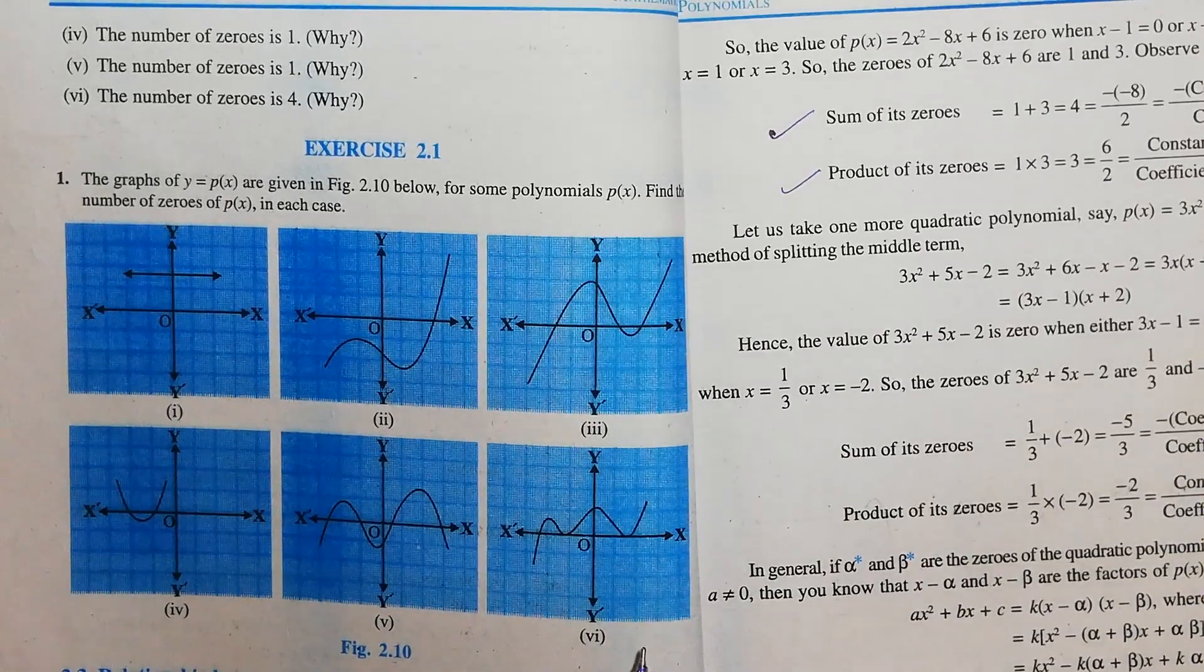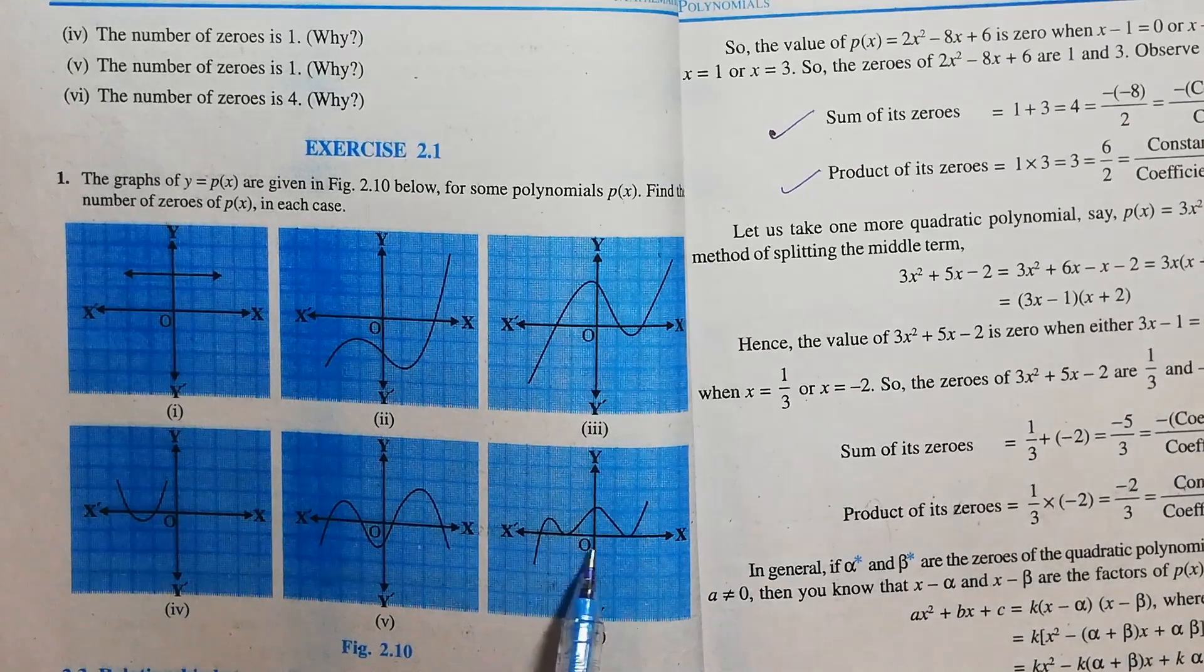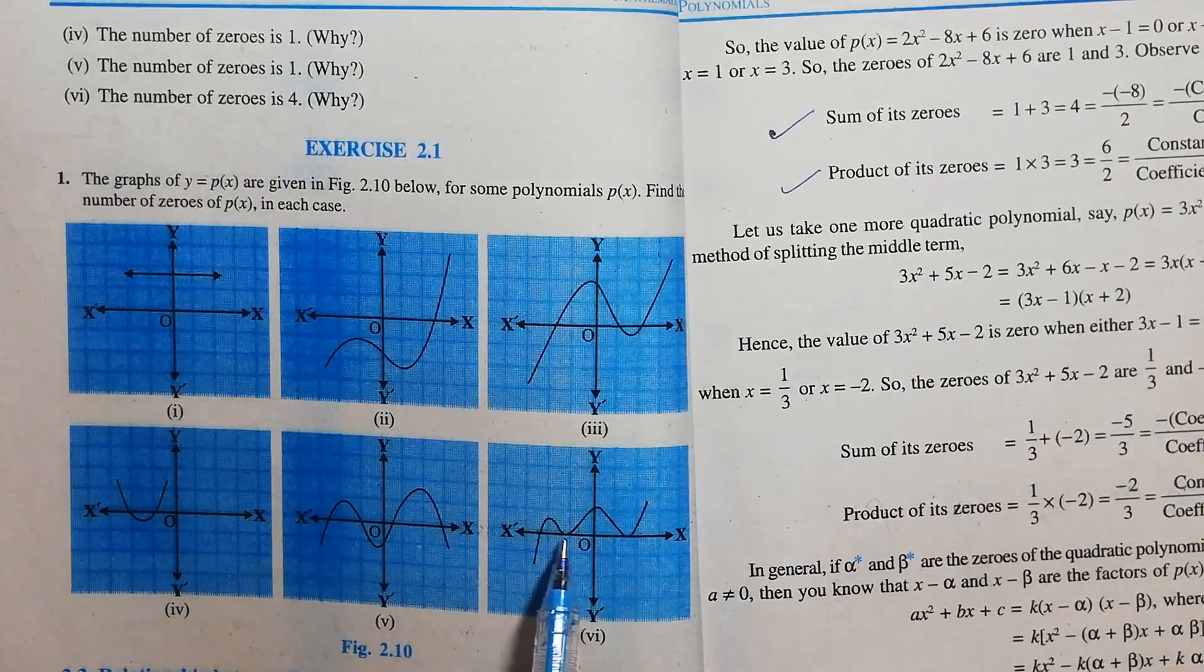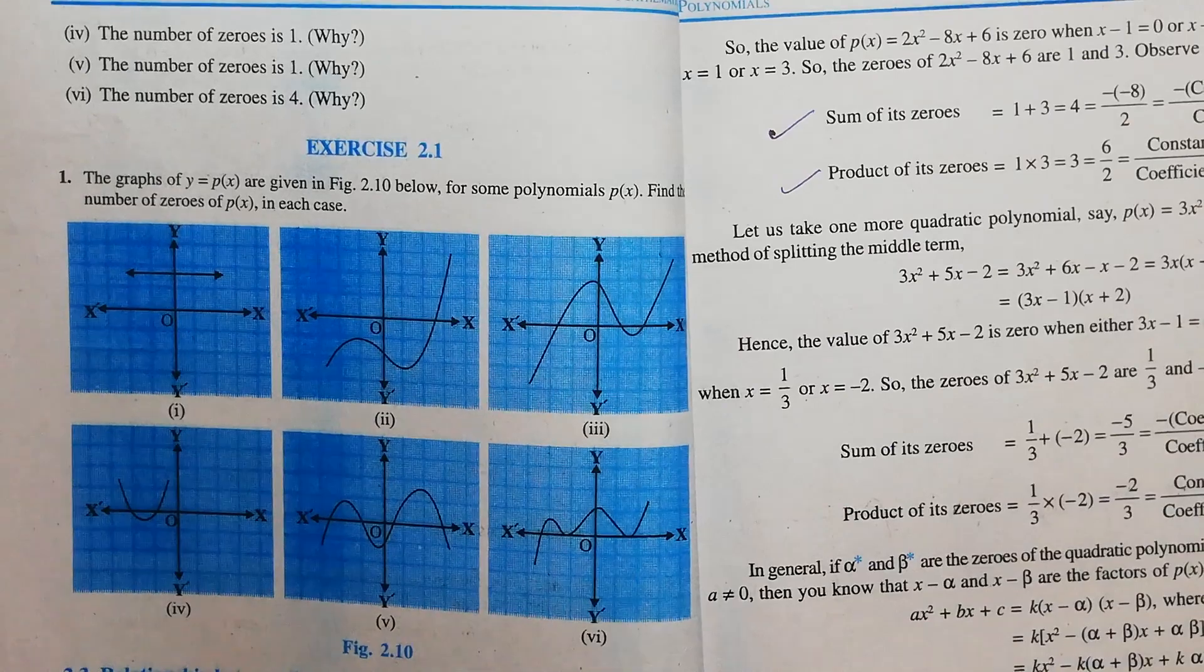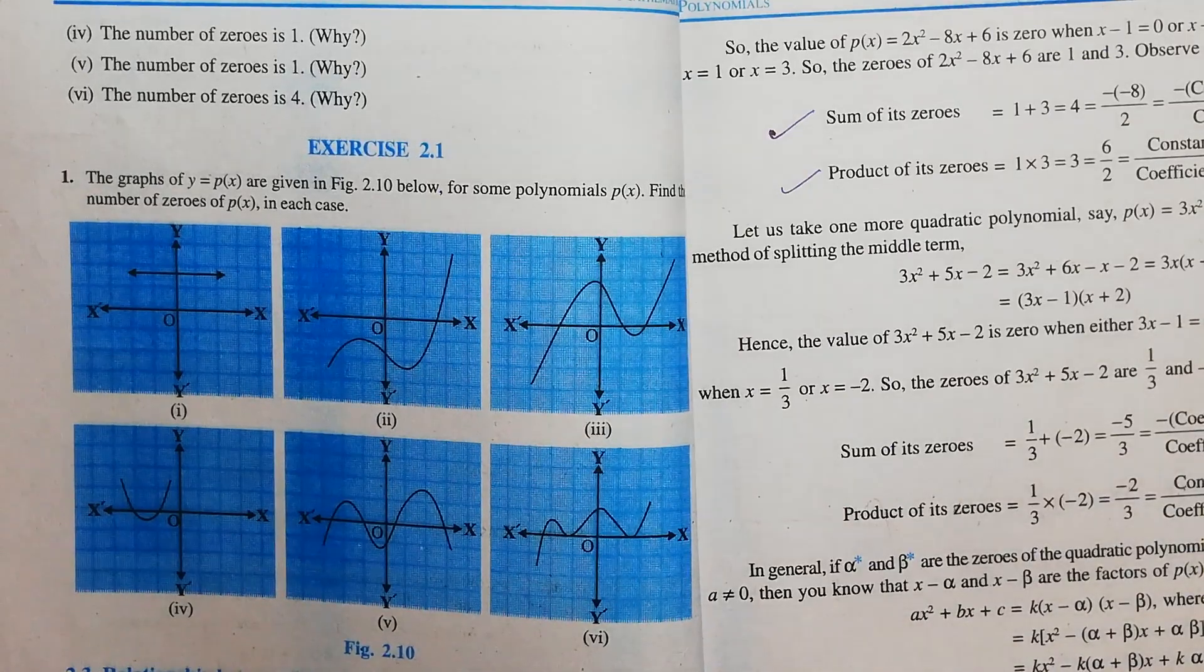Question number 6. Here, we can see the graph intersects the x-axis at 1, 2, 3 points. Therefore, the number of zeros equals 3.